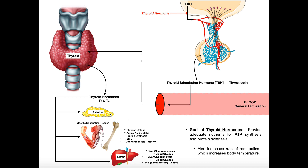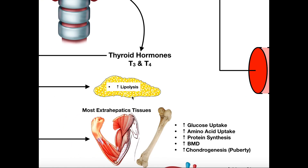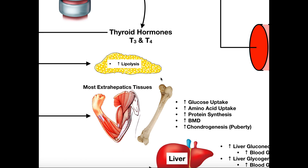Thyroid hormone exerts its effects on adipose tissue — fat tissue — which is loaded with triglycerides, the storage form of fatty acids. Thyroid hormones cause lipolysis to increase in adipose tissue, breaking down those triglycerides into individual fatty acids, which are then released into the blood. Those fatty acids can be used by all sorts of extrahepatic tissues — tissues other than the liver — such as skeletal muscle, bone, the GI tract, and the brain.